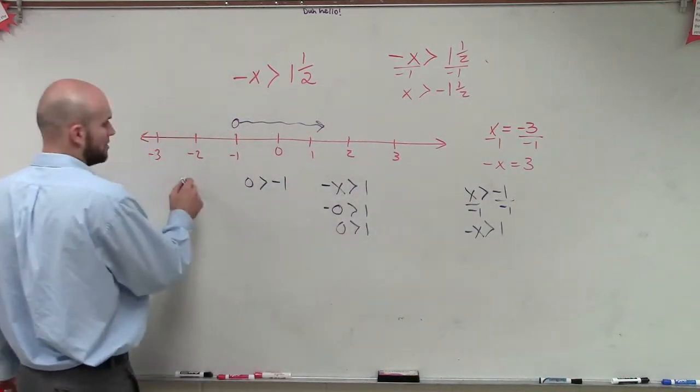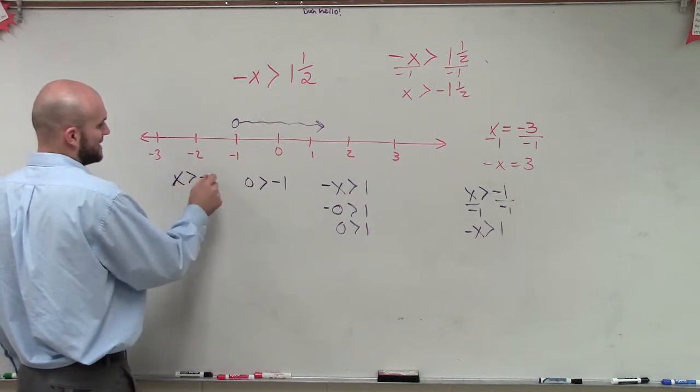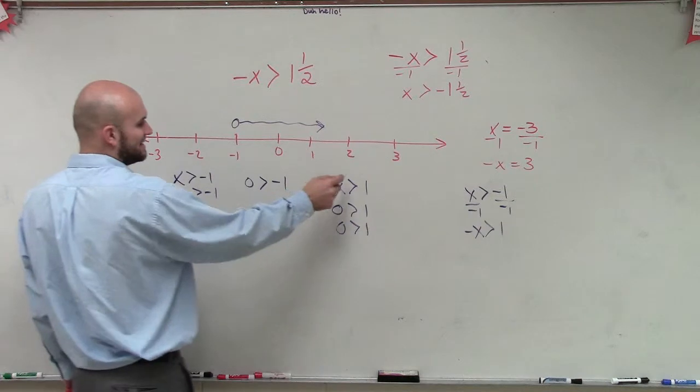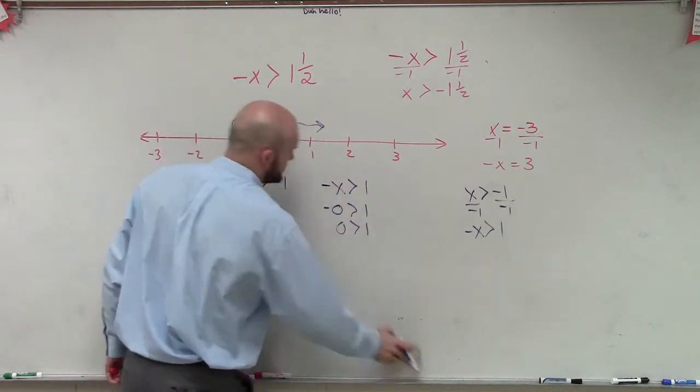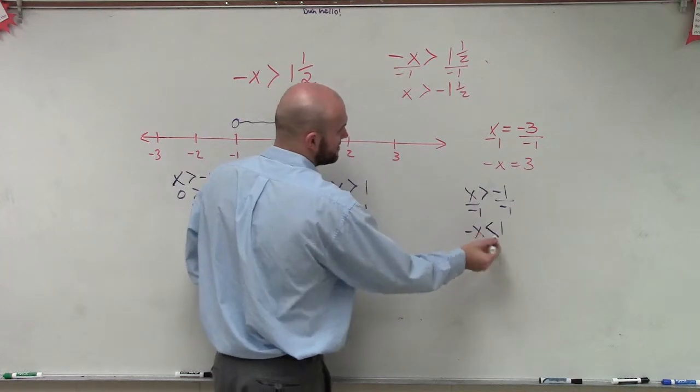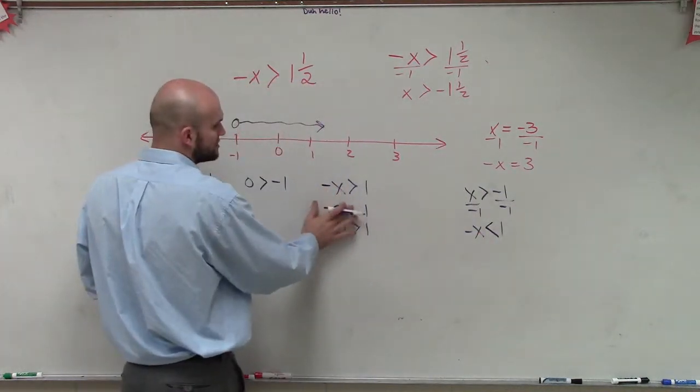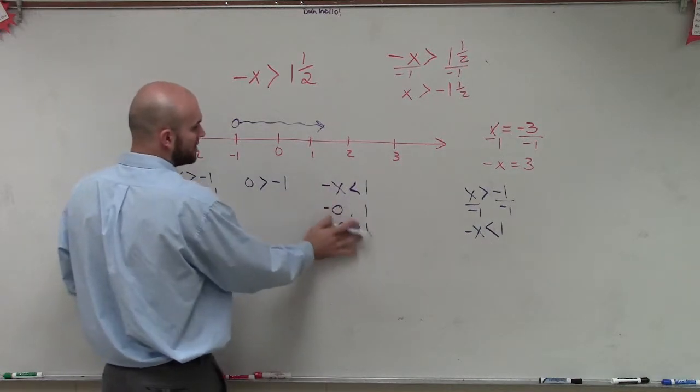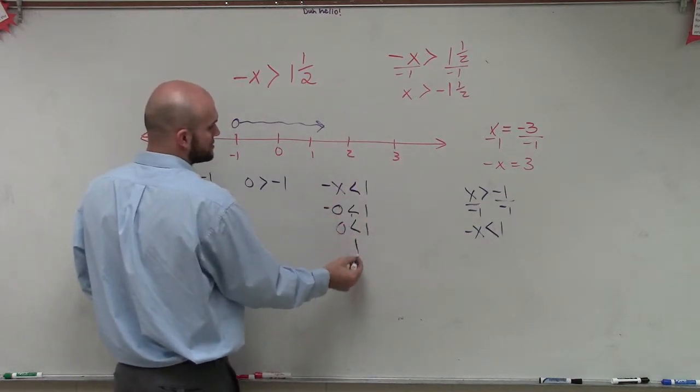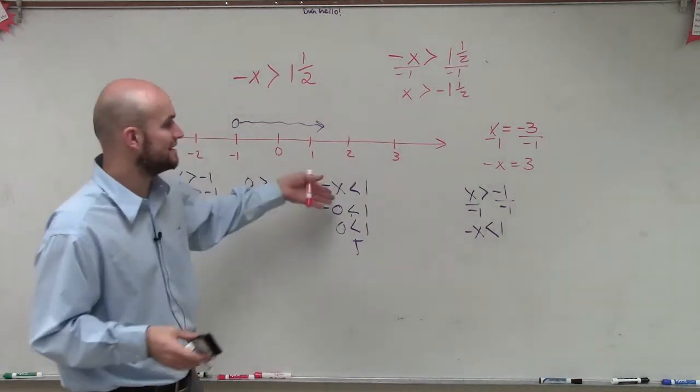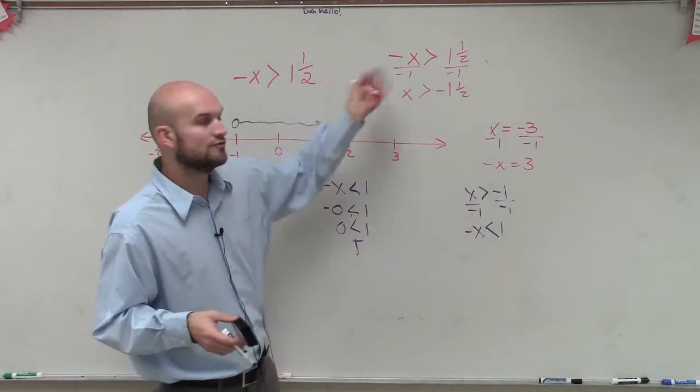When we divide by a negative number or multiply by a negative number, we have to swap the signs. So going back, x is greater than negative 1, you plug 0 in for that, that's true. To make this true, when you divide by negative 1, you have to flip the sign. When I plug this in for 0, this now is also true. So to keep the inequality true, whenever we multiply or divide by a negative number, we have to flip the sign.